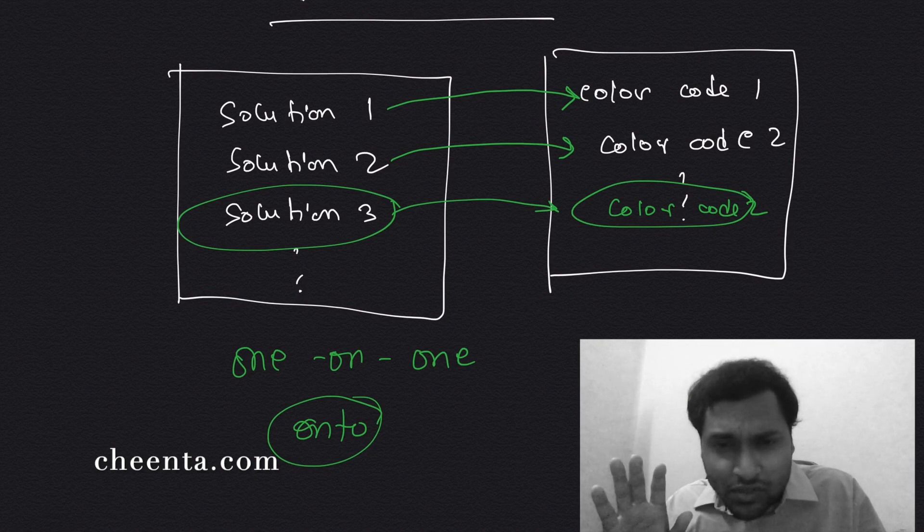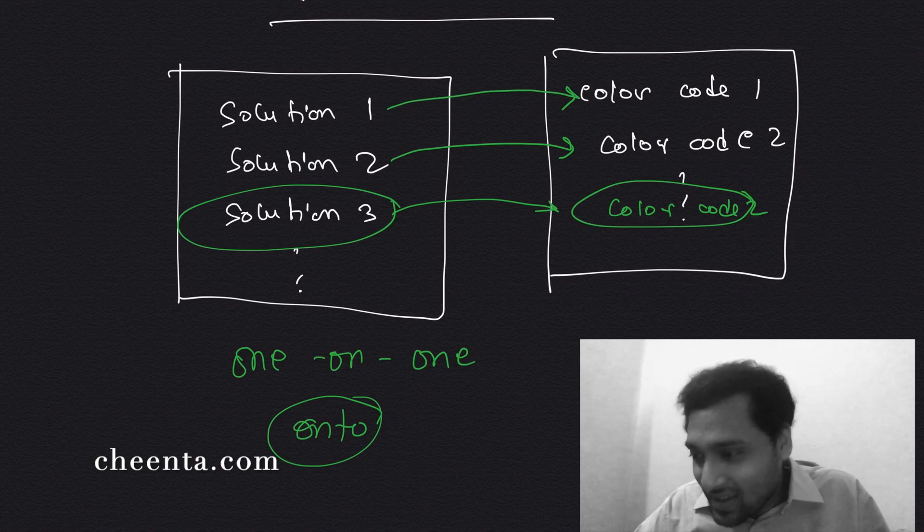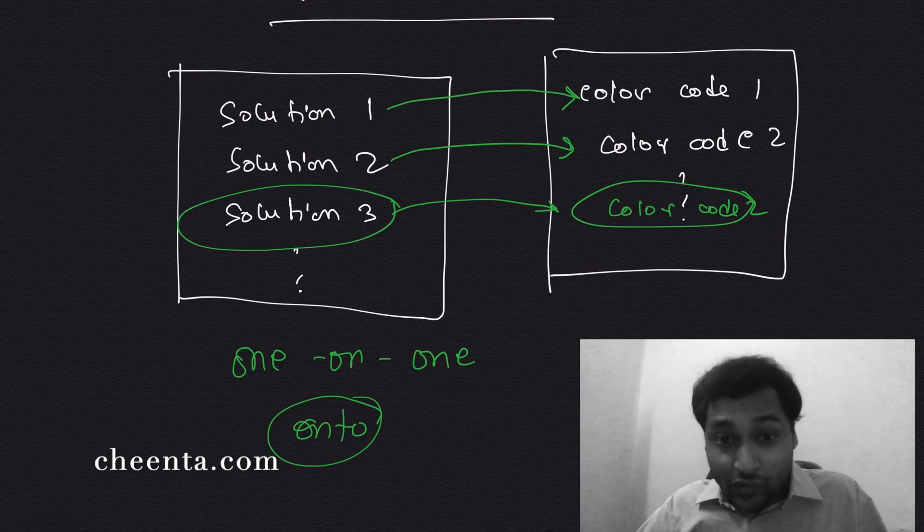It has been used by Cantor to prove some fantastic theorems about infinities. So those theorems are completely magical in nature. You should definitely Google Cantor, bijection principle, and diagonalization argument. It's fantastic. It's a very beautiful piece of mathematics.